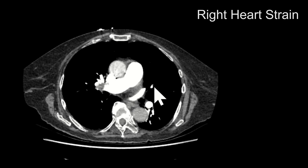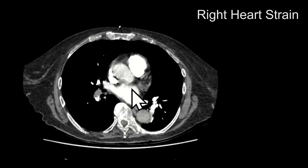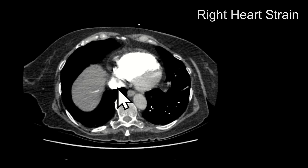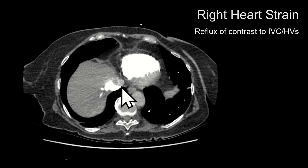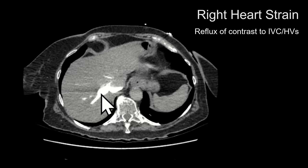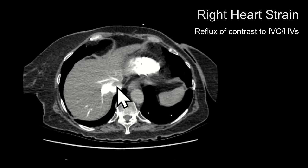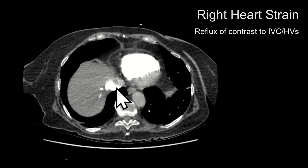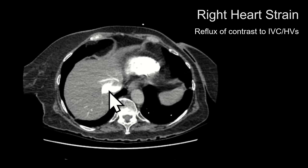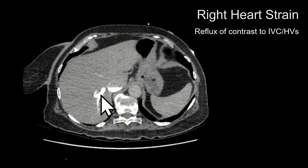In this other case, you want to look for the following signs of right heart strain. First, look for contrast reflux into the IVC or inferior vena cava and the hepatic veins. Notice the hepatic veins are well opacified with contrast here on this CTPA. You may see some contrast refluxing into the IVC even without right heart strain, but if it extends into the hepatic veins that suggests right heart strain.